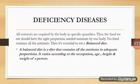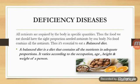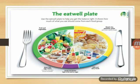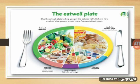A balanced diet is a diet that contains all the nutrients in adequate proportions. It varies according to the occupation, age, height, and weight of a person. Balanced diet does not mean eating only carbohydrates, fats, or proteins — you need everything in proper proportions. The eat well plate shows a portion of carbohydrates, fruits and vegetables, meat products, and dairy products that together lead to a balanced diet.